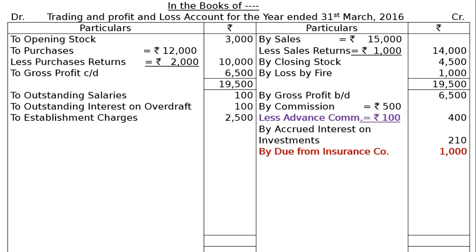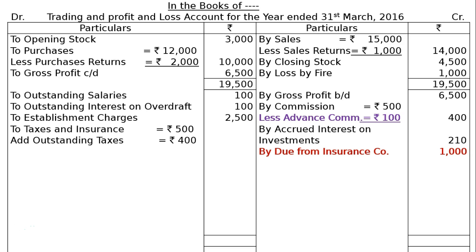Next: Establishment Charges Rs. 2,500; Taxes and Insurance Rs. 500. Adjustment A states taxes of Rs. 400 are outstanding and insurance of Rs. 50 is prepaid. So: Rs. 500 plus outstanding taxes Rs. 400, less prepaid insurance Rs. 50, gives Rs. 850 in the final column.